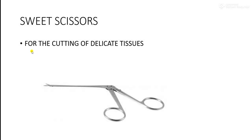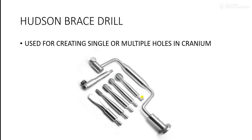Sweet scissors, as the name suggests, are used for cutting of delicate tissues. Next is the Hudson brace drill. Nowadays different types of drills are available to create single or multiple holes in the cranium. Previously, only manual drills were used to create openings in the cranium.